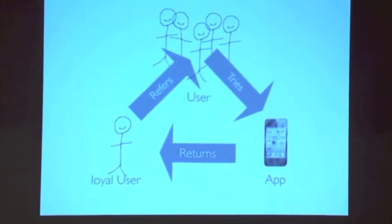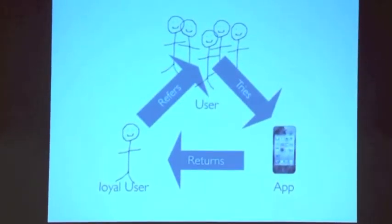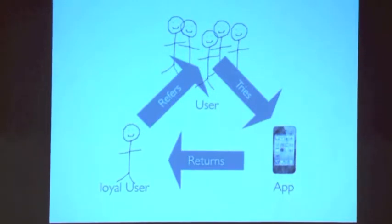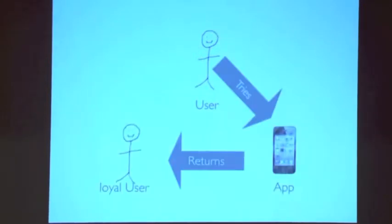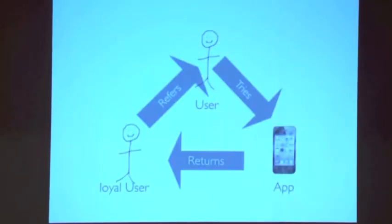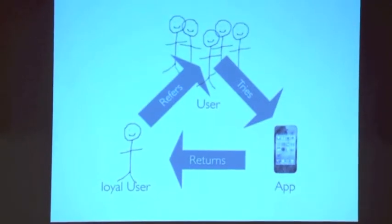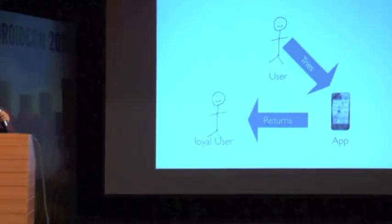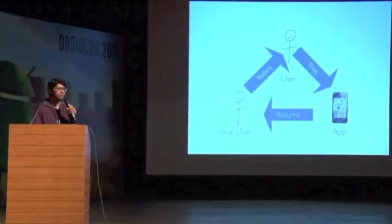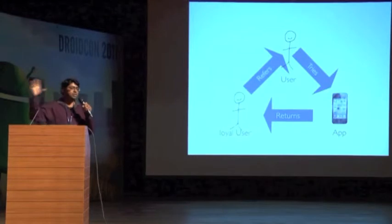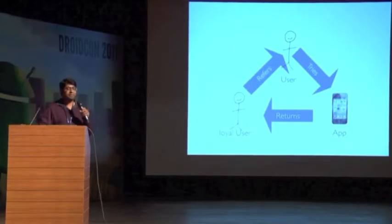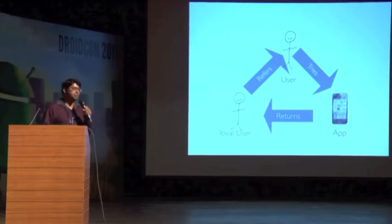A loyal user likes the app so much that they're going to invite their friends to come try it out. That's the basic model — three stages. You can break it down into smaller segments like sign-up and completion of sign-up, but essentially there are three stages: trial, return, referral. That means more users for you.